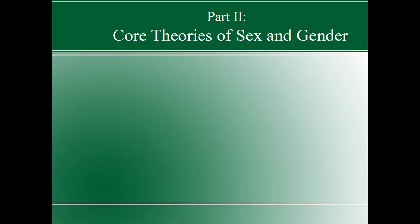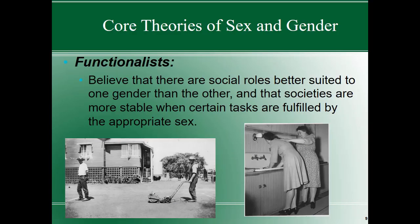Let's talk about how the three core sociological theories address sex and gender. Functionalists believe there are social roles better suited to one gender than the other, and that societies are more stable when certain tasks are fulfilled by the appropriate sex. Most modern functionalists have stepped away from this topic, but the classic perspective is that if certain jobs are associated with men and others with women, all of those jobs will get done and society functions as a whole.